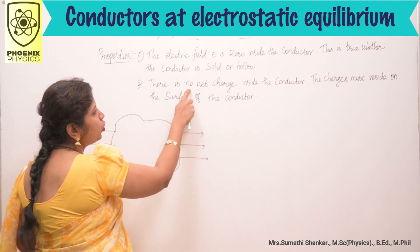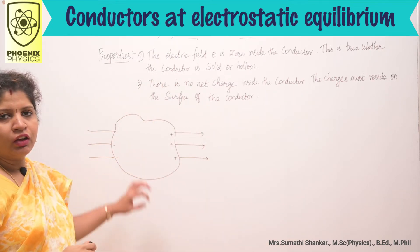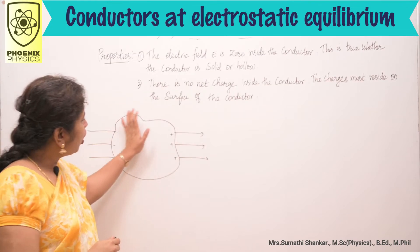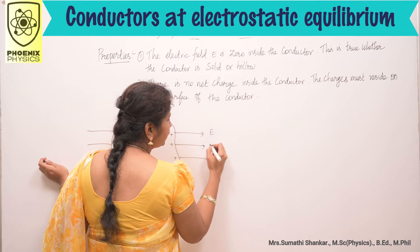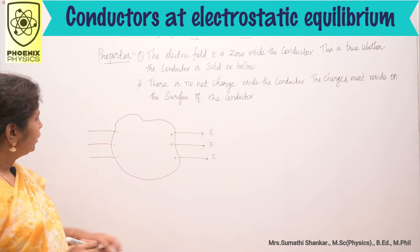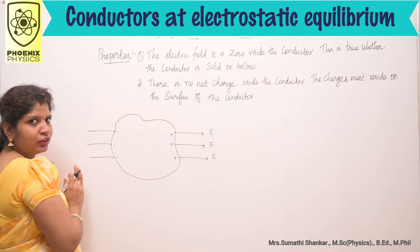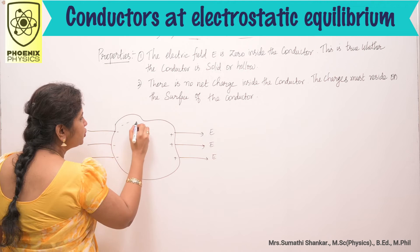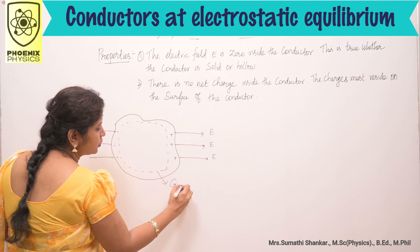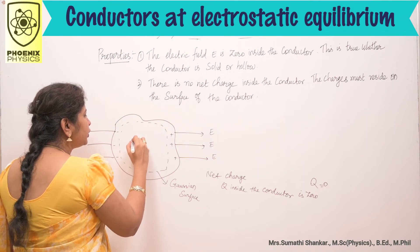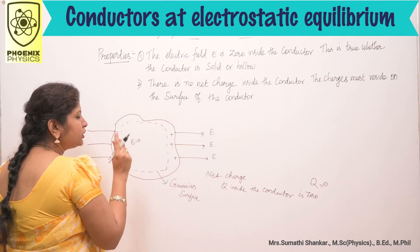Next property: there is no net charge inside the conductor. The charges must reside on the surface of the conductor. Consider an arbitrary shaped conductor placed in a uniform electric field E. Due to this field, positive charges arrange on the right side and negative charges on the left side. Now imagine a Gaussian surface drawn inside the conductor. Inside the conductor, you know that E is equal to 0. This is our first property.